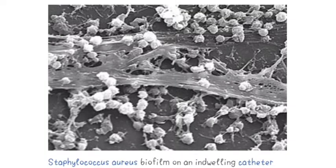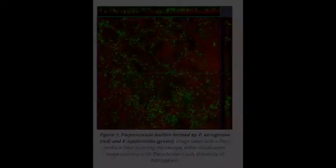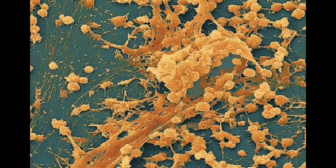A biofilm comprises a syntrophic consortium of microorganisms in which cells stick to each other and often to a surface. These adherent cells become embedded within a slimy extracellular matrix composed of extracellular polymeric substances, or EPS. Biofilm is a system that can be adapted internally to environmental conditions by its inhabitants, and may form on living or non-living surfaces in natural, industrial, and hospital settings.